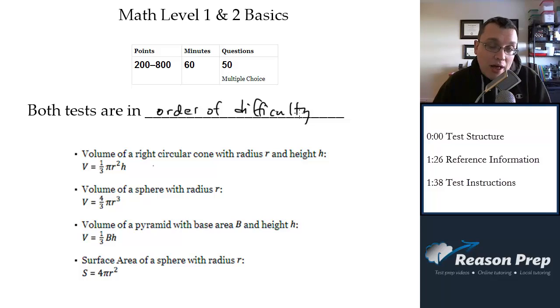The blue book in the answer key will actually show you what percent of students got which questions right. So you can actually see how hard, in a really precise quantitative way, how hard certain questions are compared to others. That's interesting to look at. So check that out in the answer key of the blue book, after you've done the test.